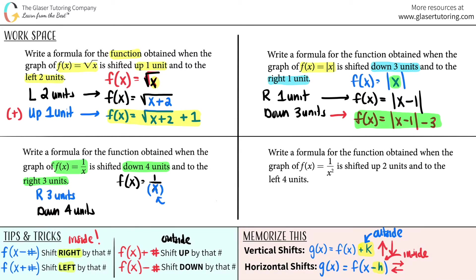To shift right, I work inside the function — the x is in the denominator. Right shift is a negative, so it becomes 1 over (x minus 3). Then for down four units, I add that to the outside after the function — down is negative — so minus 4. The final answer is f(x) equals 1 over (x minus 3) minus 4.